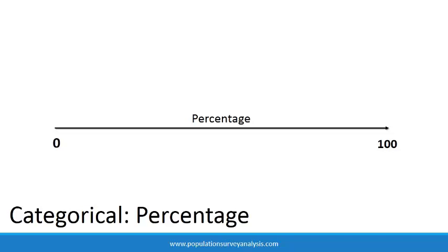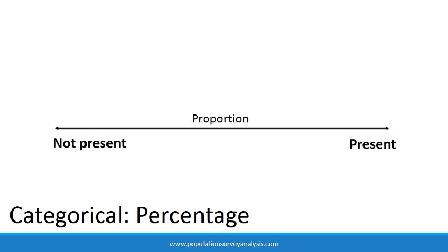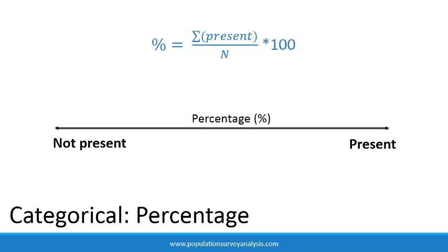Percentages are used to describe categorical data and exist on a scale of 0 to 100. Percentages are not to be confused with proportions, which exist on a scale of 0 to 1. The percentage is the proportion multiplied by 100. Proportions are calculated from a binary response — a characteristic is present or not. A proportion is the mean of a binary response: it is the count of observations that have the characteristic of interest divided by the total count of observations, and we multiply this by 100 to get the percentage.